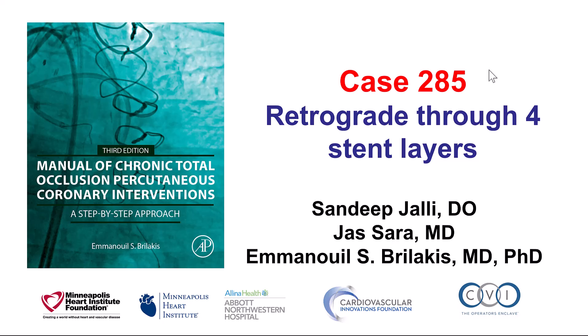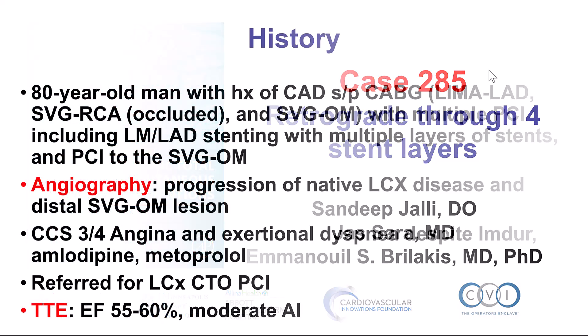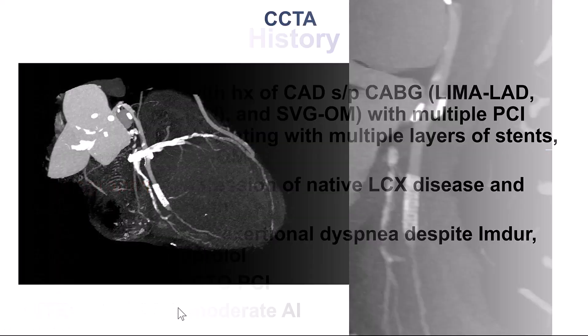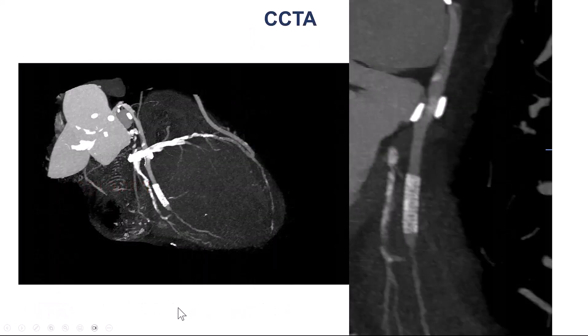This is a case of retrograde crossing through four layers of stent. The patient was an elderly gentleman with previous bypass, who had failure of the vein graft of the obtuse marginal branch that was stented, but he was sent for attempting to re-canalize the native circumflex CTO. He had normal left ventricular ejection fraction.